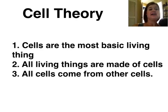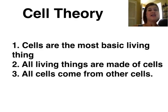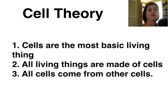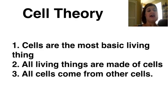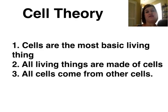The first part of cell theory: cells are the most basic living thing — in other words, the smallest thing still considered living by scientists. Two, all living things are made of cells, so if it's a living thing, it's made of cells. And three, all cells come from other cells. They don't just magically appear.